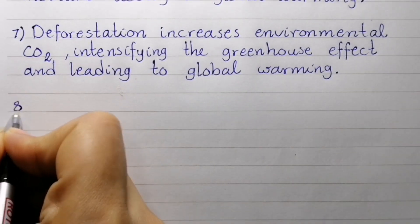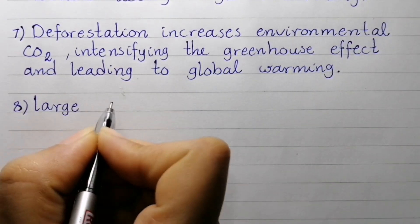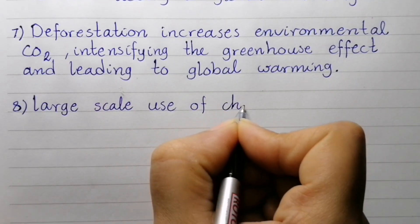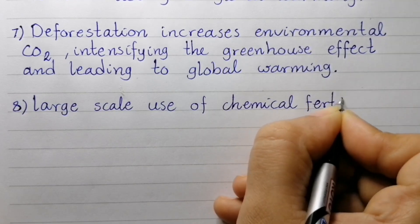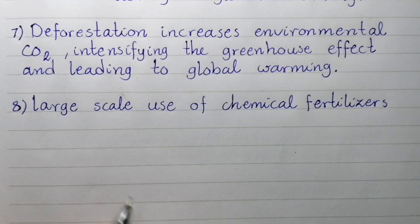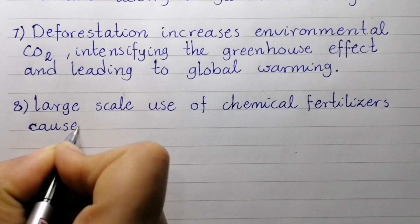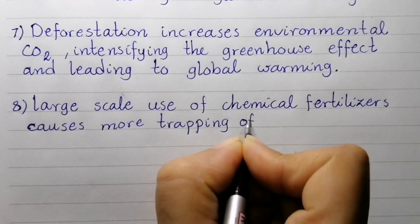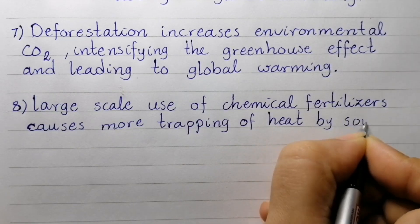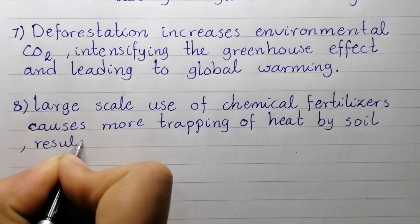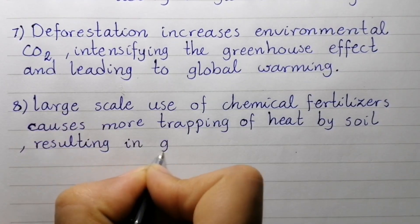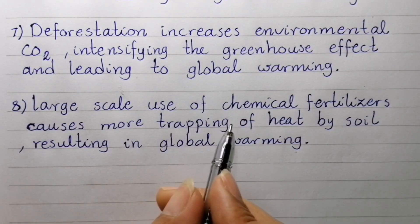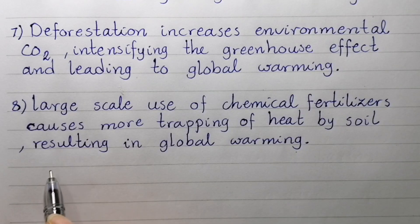Point number eight: large-scale use of chemical fertilizers causes more trapping of heat by soil, resulting in global warming.